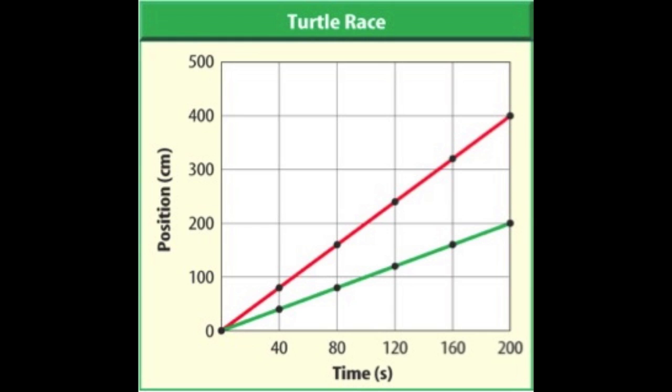So if this was two turtles, say we had a red turtle and a green turtle over this course of time here, which looks like 200 seconds, the red turtle went a greater distance. So if the red turtle went a greater distance in the same amount of time, that tells us that turtle was moving faster, and that's why the red line has a greater slope.